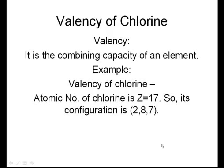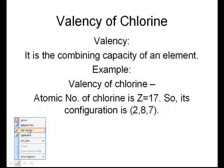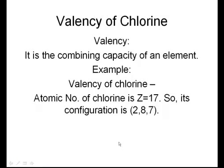Here, the atomic number of chlorine is Z=17. 17 is nothing but the number of protons present in an atom. So, the number of protons present in chlorine are 17, and the electronic configuration here is 2,8,7.